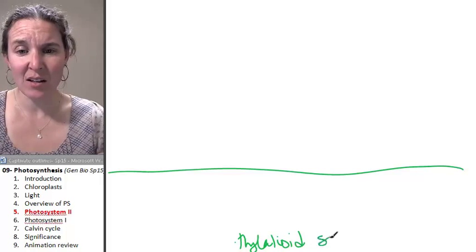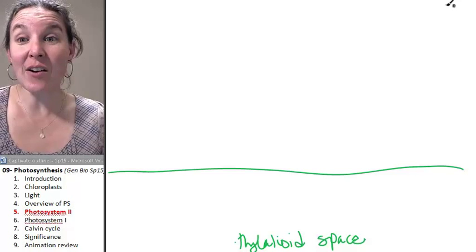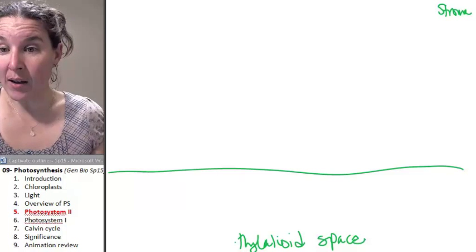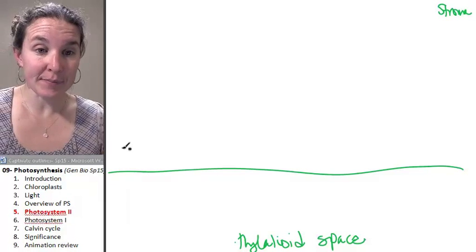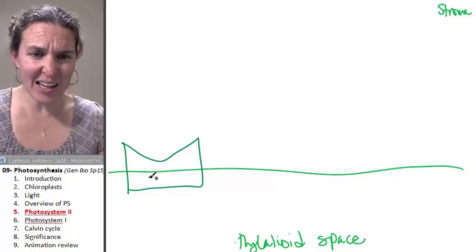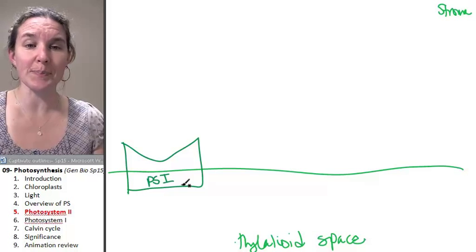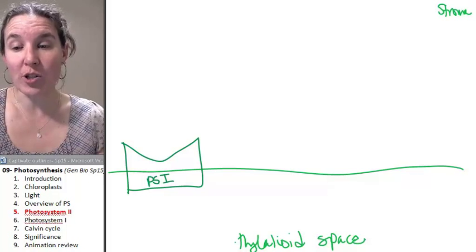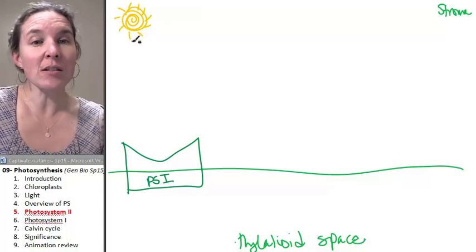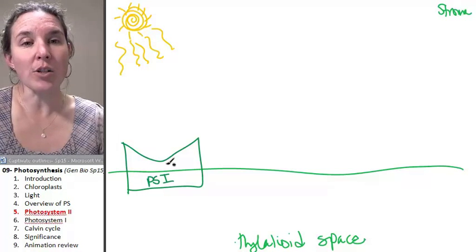Thylakoid space, seriously. That's going to be important. And this out here is my stroma. And I'm going to draw you my photosystem. It looks just like I showed you because I'm a nerd, and that's just how my brain works. And no picture of photosynthesis is complete without a sunshine.